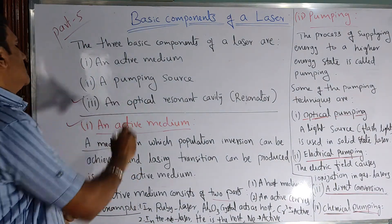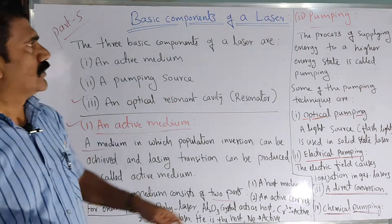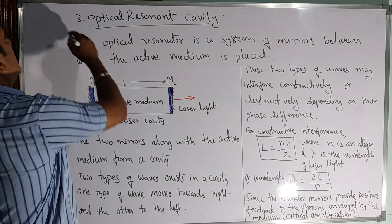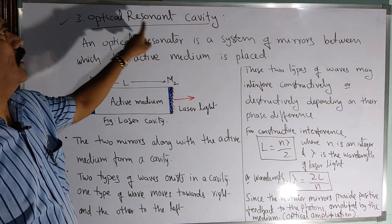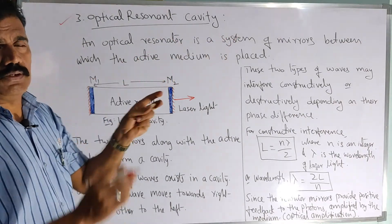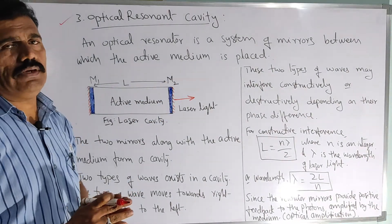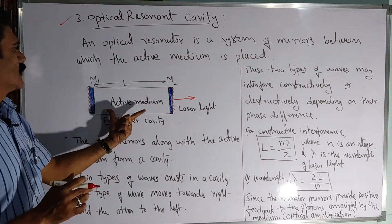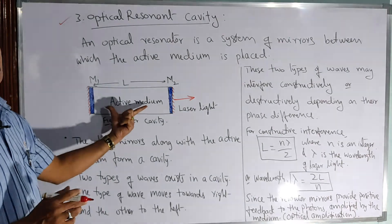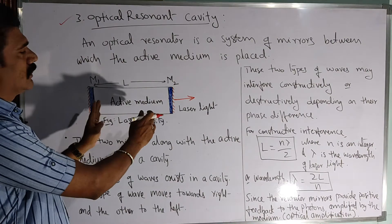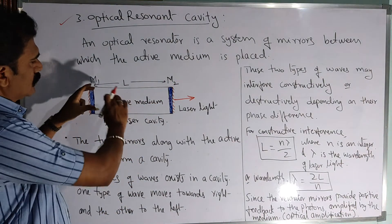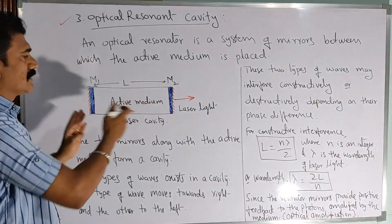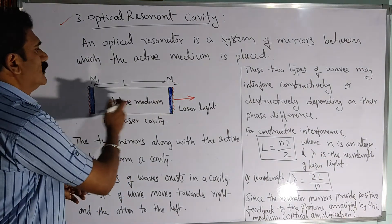The third component required for laser action is an optical resonant cavity. An optical resonator or optical resonant cavity is a system of two mirrors, between which the active medium is placed. The active medium should be kept between the two parallel mirrors M1 and M2 — it looks like a long pipe of length L. The photons emitted by various processes get reflected by the two mirrors M1 and M2.